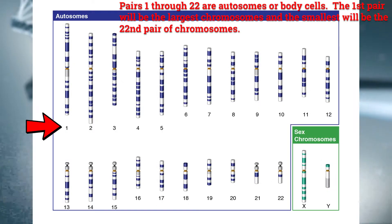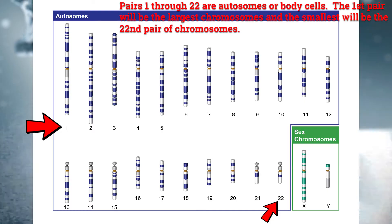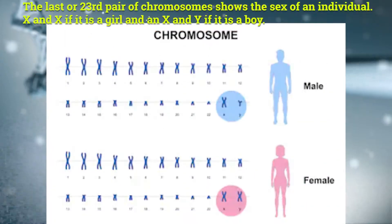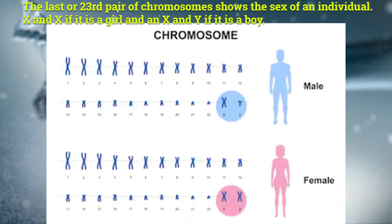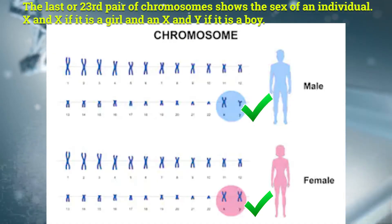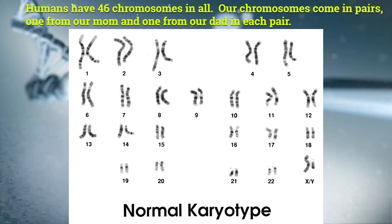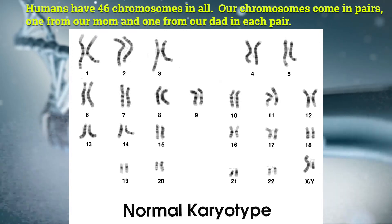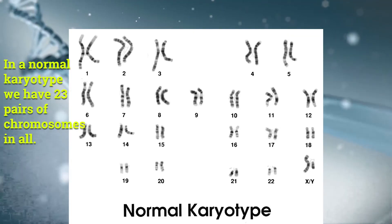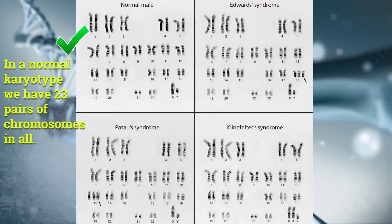Important fact: the first 22 pairs of chromosomes in a karyotype are body cells. The first pair will be the largest chromosomes, and the smallest will be the 22nd pair of chromosomes. The last, or 23rd pair of chromosomes, shows the sex of an individual — an X and an X if it is a girl, and an X and a Y if it is a boy. Remember, humans have 46 chromosomes in all. Our chromosomes come in pairs — one from my mom and one from my dad in each pair — so we have 23 pairs of chromosomes in all.